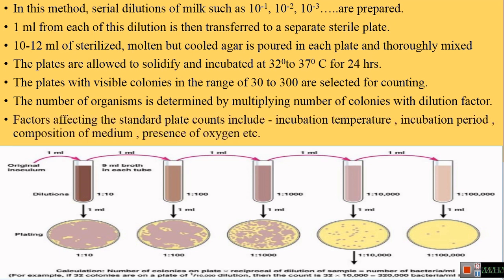The Standard Plate Count method is affected by a number of factors: incubation temperature, incubation period, composition of the medium, and presence of oxygen. This means only those organisms growing under the given set of conditions are counted — those growing at a specific temperature, within a specific incubation period, in the presence of oxygen, and on the medium provided for their cultivation.